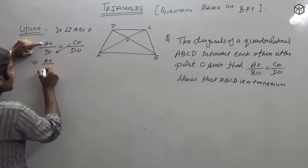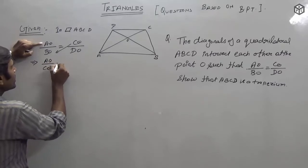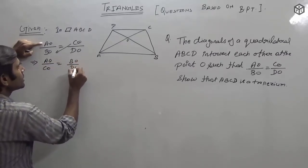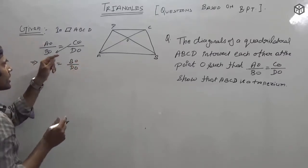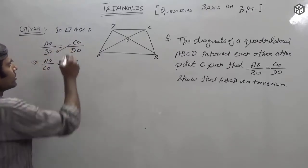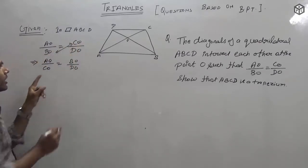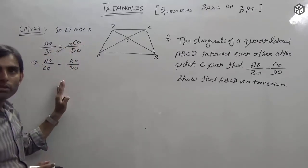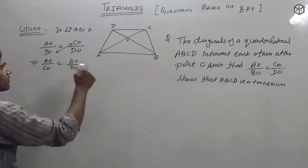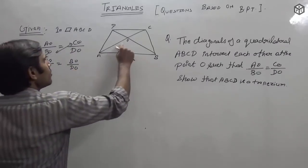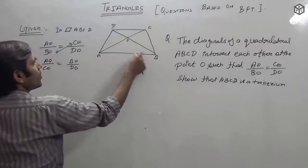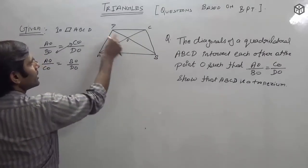Now we can modify this ratio. AO upon BO equals CO upon DO. Rearranging by swapping CO and BO, we get AO upon CO is equal to BO upon DO.